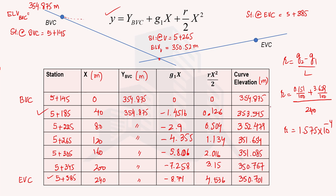We have now calculated the curve elevation at all stations 40 meters apart. Looking at the results, the elevation at BVC is the highest, and the elevation at EVC is the least, confirming the sag curve shape where the curve dips downward and then rises. This is a parabolic curve. We have one check available to verify whether our calculations are correct.